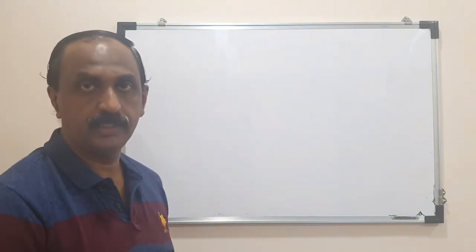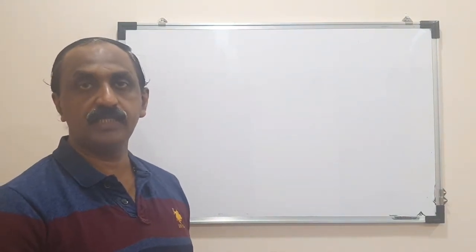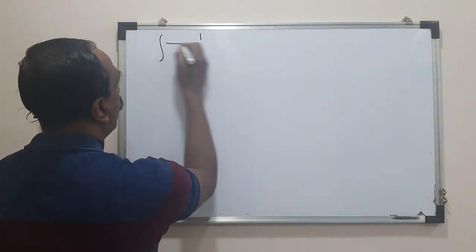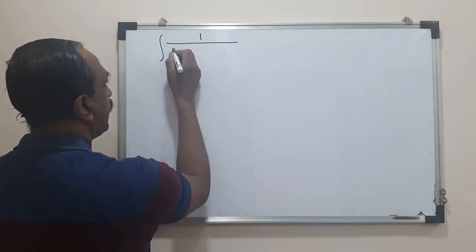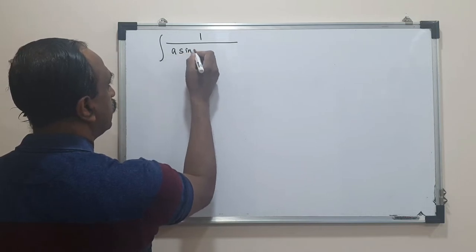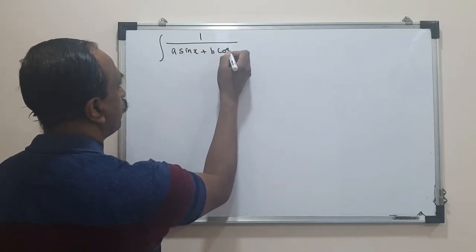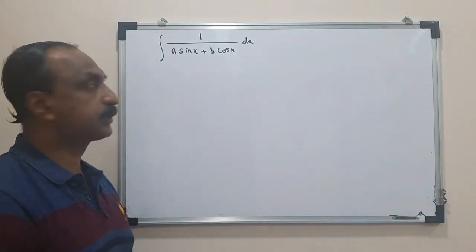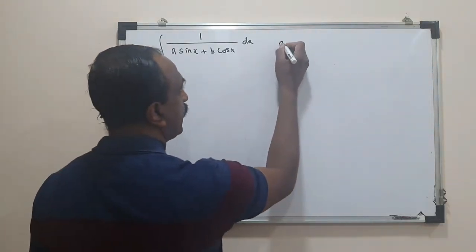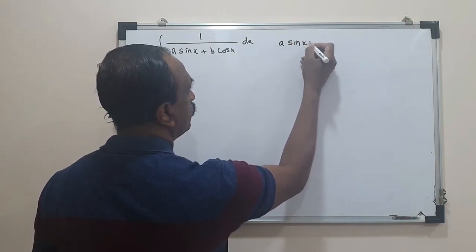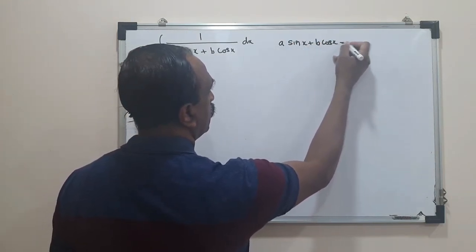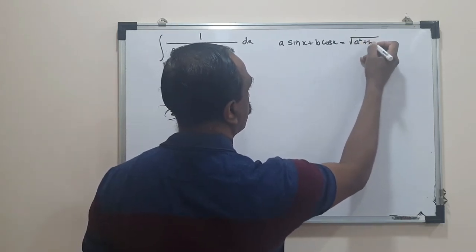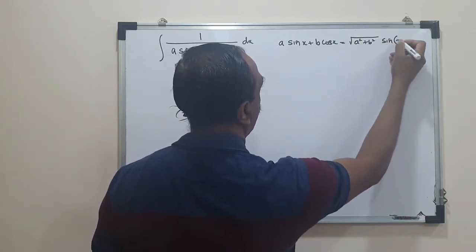I will do some more problems on integral of tan x, sec x, cot x, and cosec x. The first one is integral of 1 upon A sin x plus B cos x. You must remember that whenever you are given A sin x plus B cos x, this can be converted to root of A squared plus B squared into sin of x plus alpha.